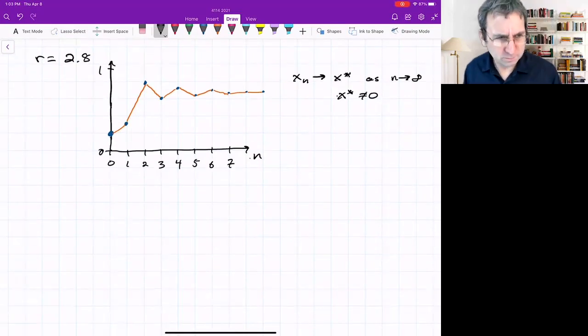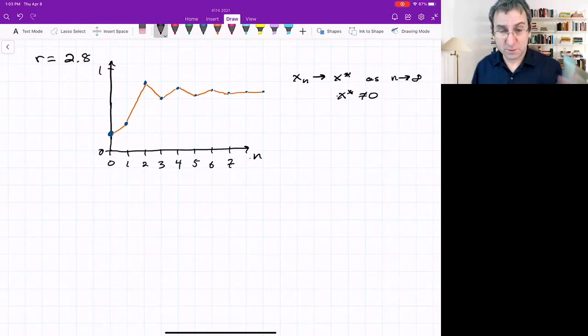Remember the range for r, we said it's conventionally taken to be from 0 to 4.